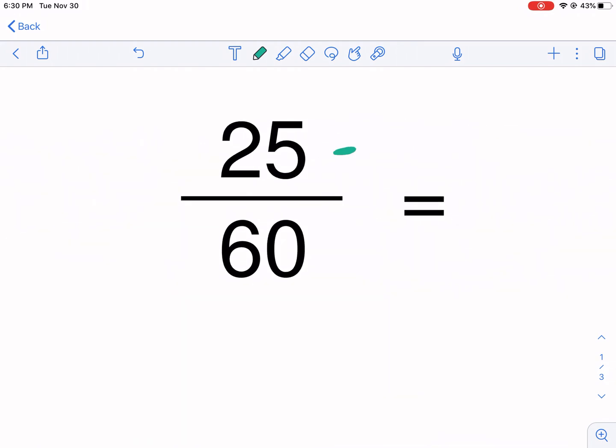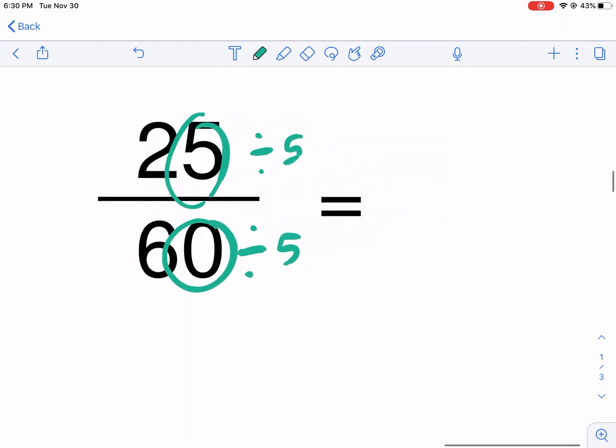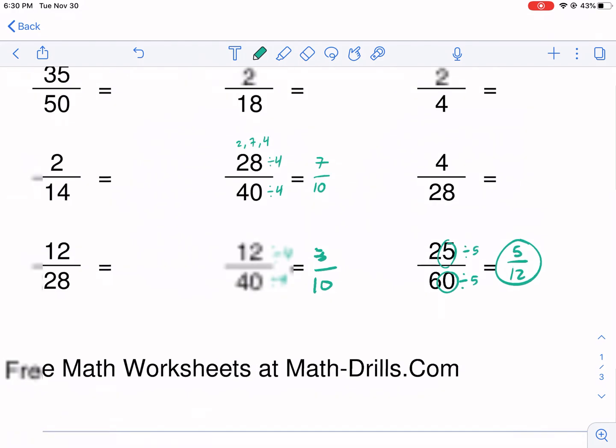Anytime it's a 5 here and a 0 here, you can always divide by 5. That's another little trick. So I divide by 5, getting sloppier as I go here, I get 5 over 12. And that's my final answer also.